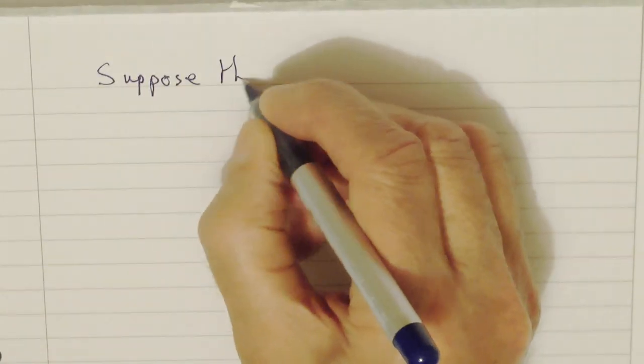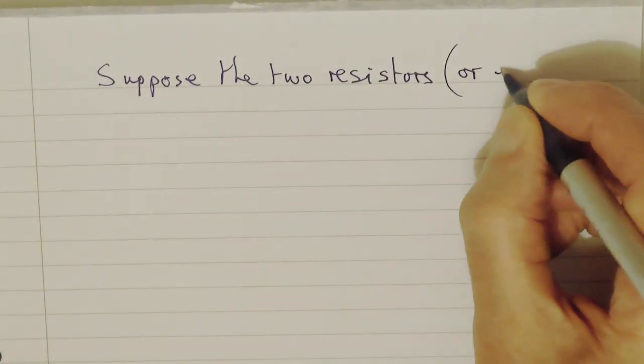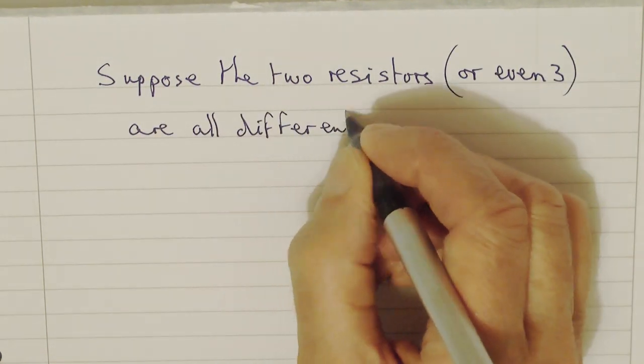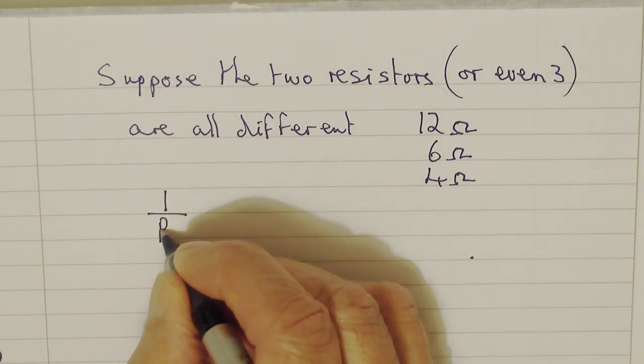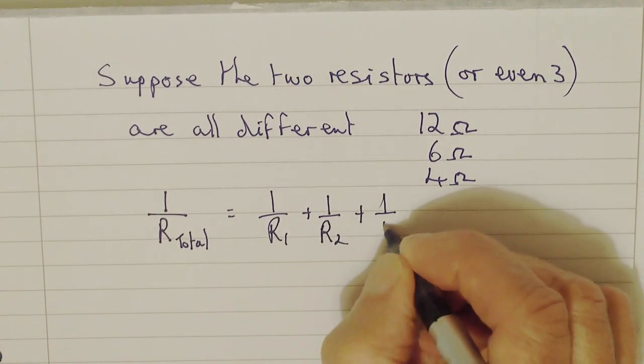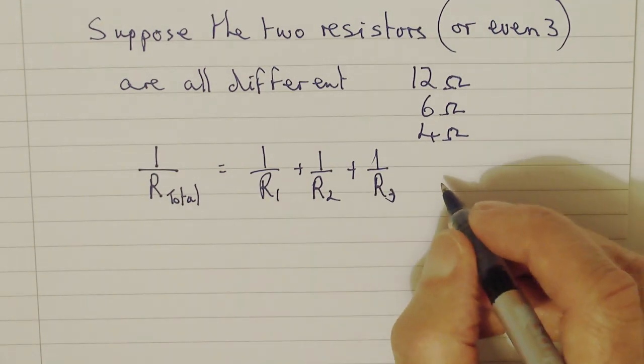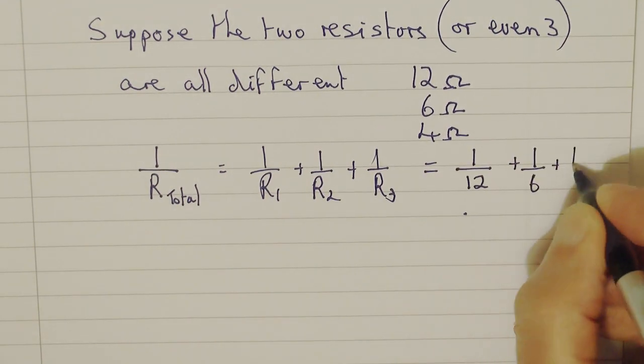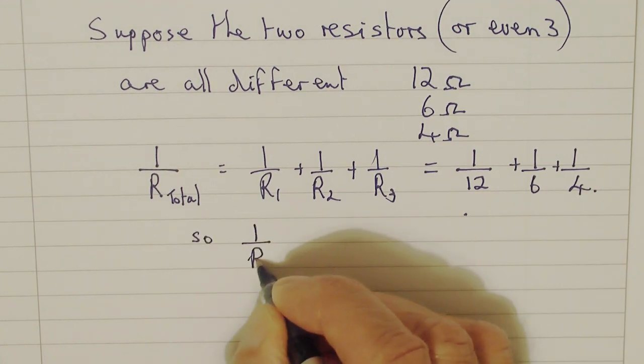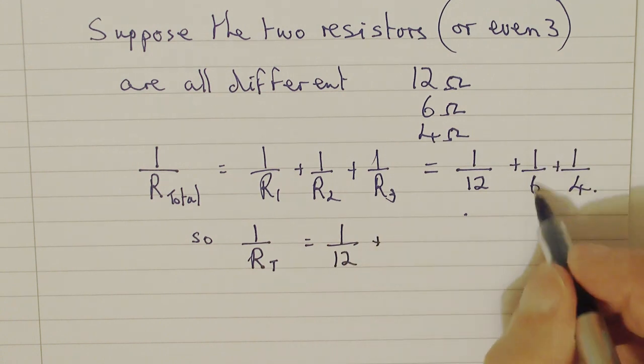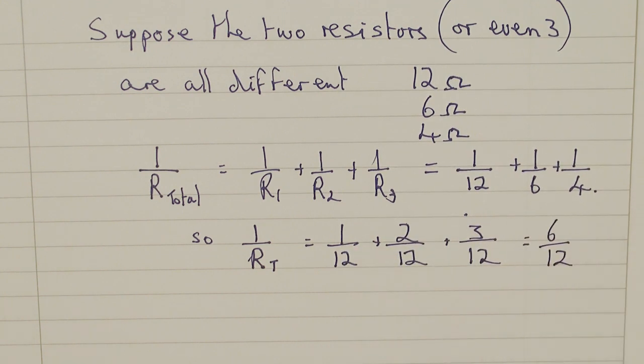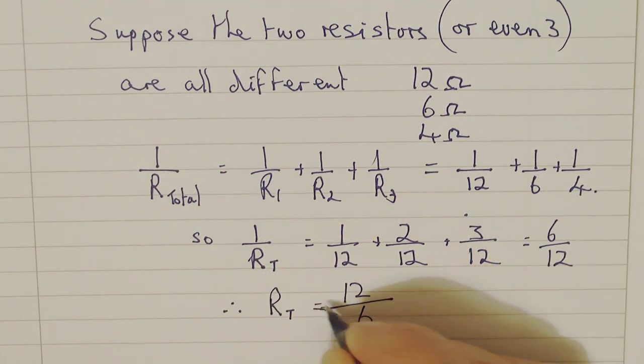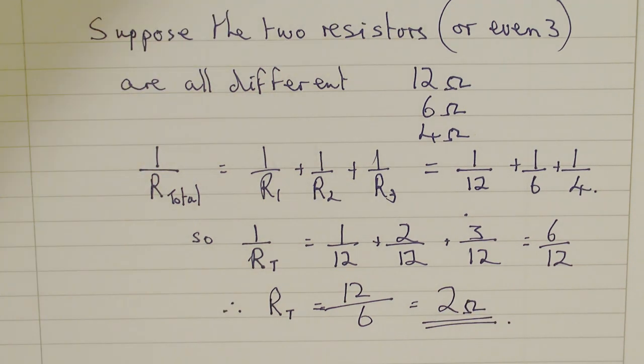One more example. Supposing that two resistors, or perhaps we even have three resistors, which are different from one another. The method of calculation is exactly the same. 1 over R total is equal to 1 over the value of each of the individual resistors. So the total of the resistance, 1 over R total, is 1 over 12 plus 1 over 6 plus 1 over 4 in this example. Now, I'm going to do this in terms of fractions, in terms of twelfths. 1 sixth is 2 twelfths, and a quarter is 3 twelfths. And adding all those together is 6 twelfths. Now, inverting them both gives the total resistance, 12 over 6, 2 ohms. I hope you find that useful. Thank you for watching.